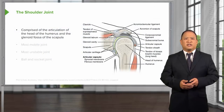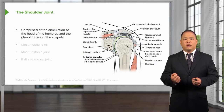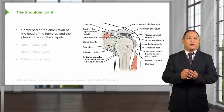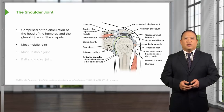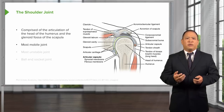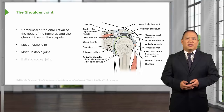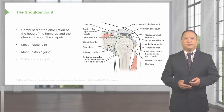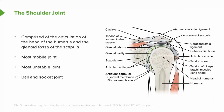The joint consists of the articulation between the head of the humerus and the glenoid fossa of the scapula. It is extremely mobile, but at the same time that makes it extremely unstable and more susceptible to injury. It is a ball and socket joint, allowing for 180 degrees of potential motion and movement.